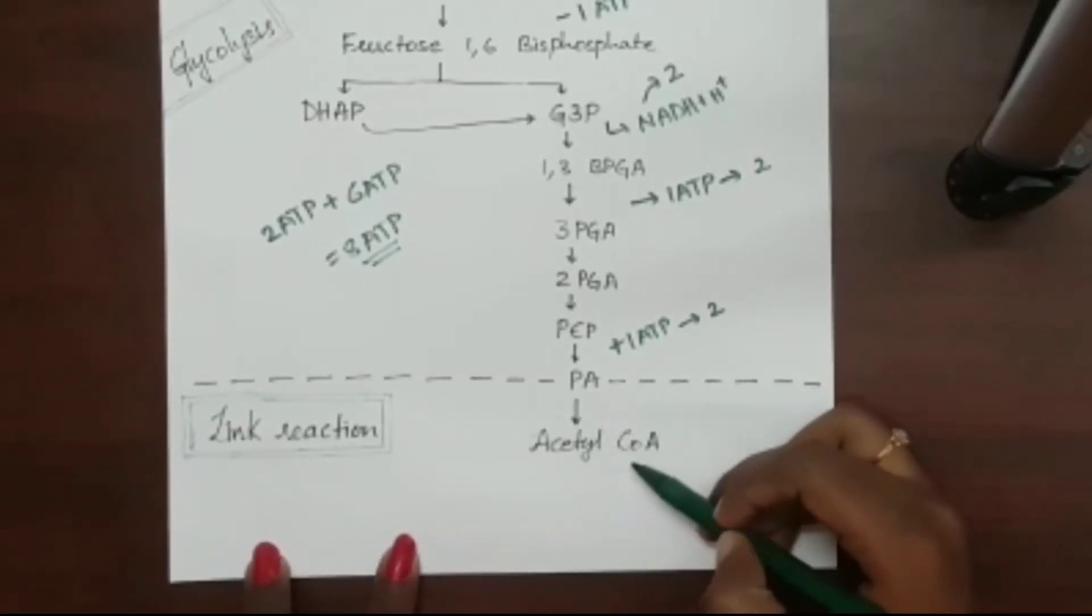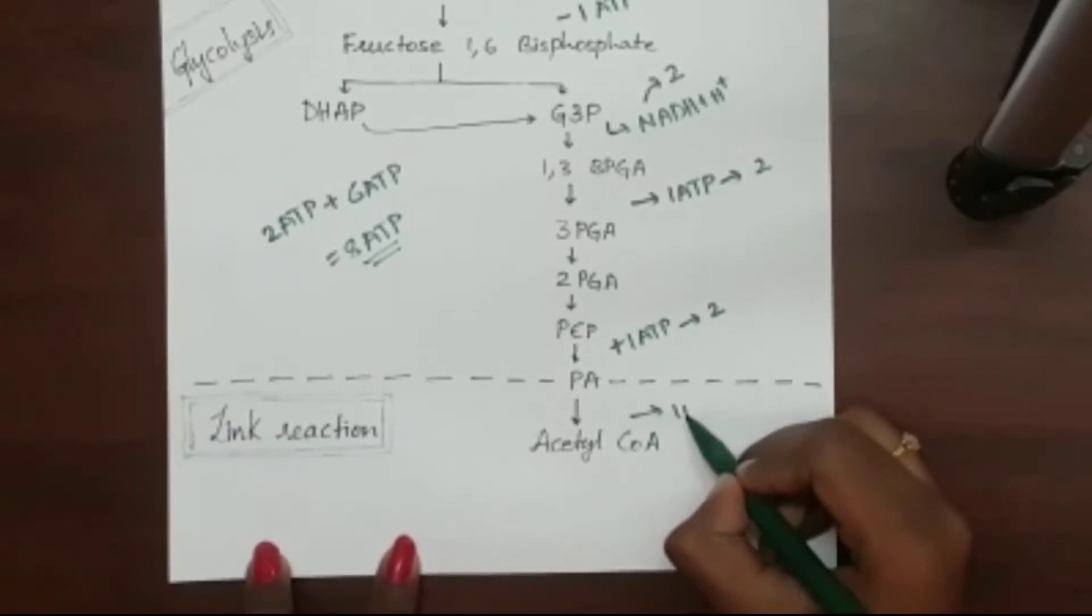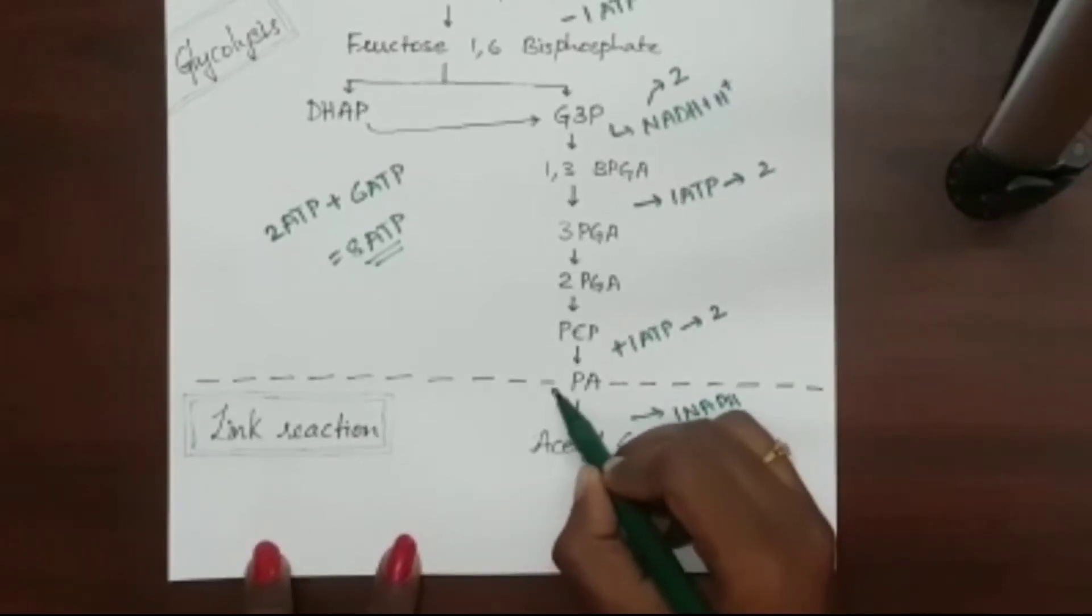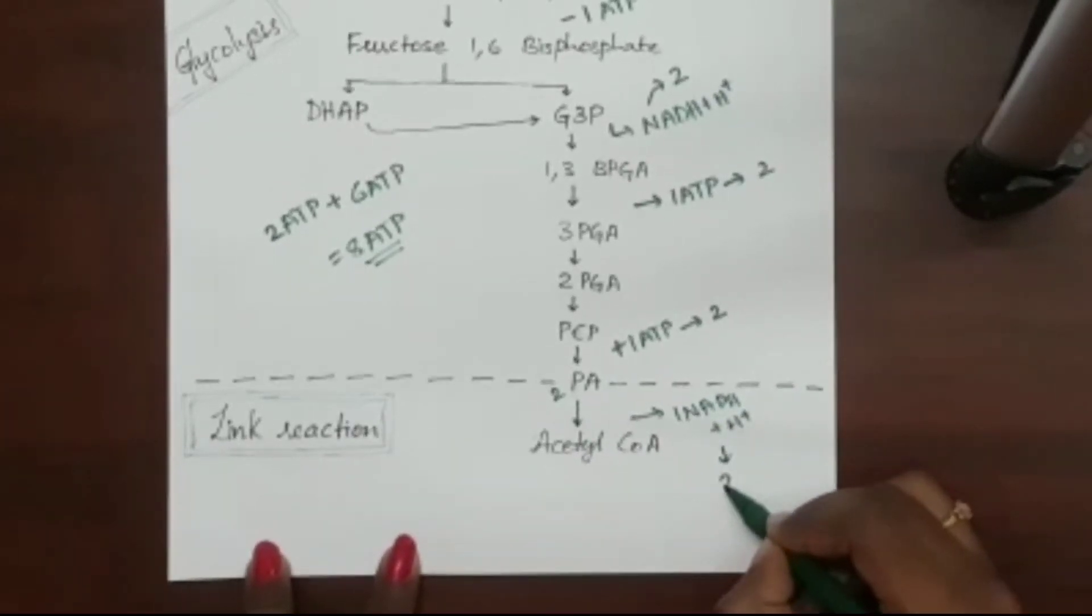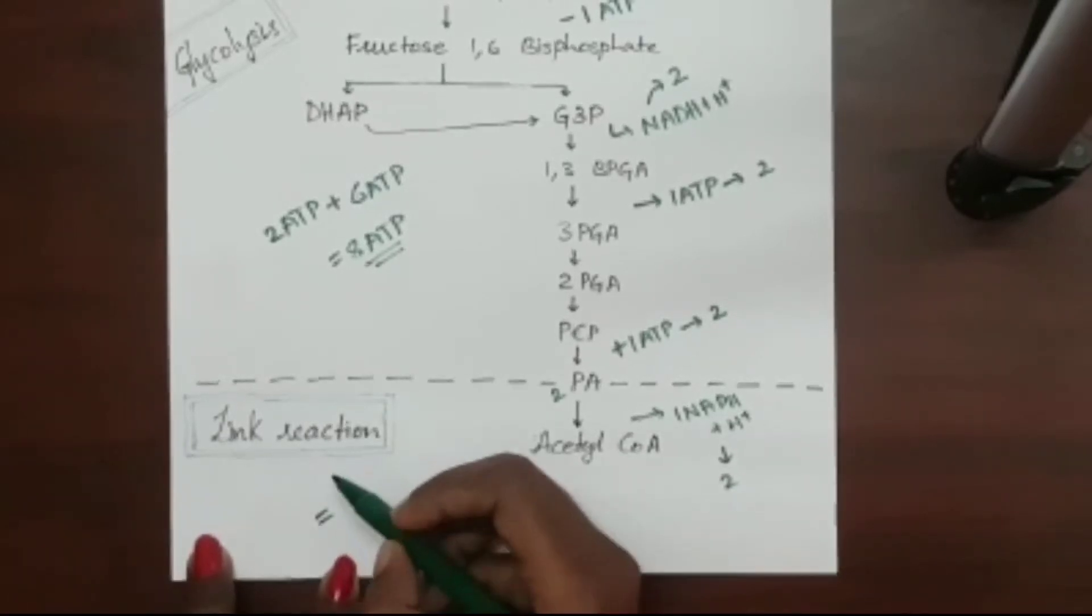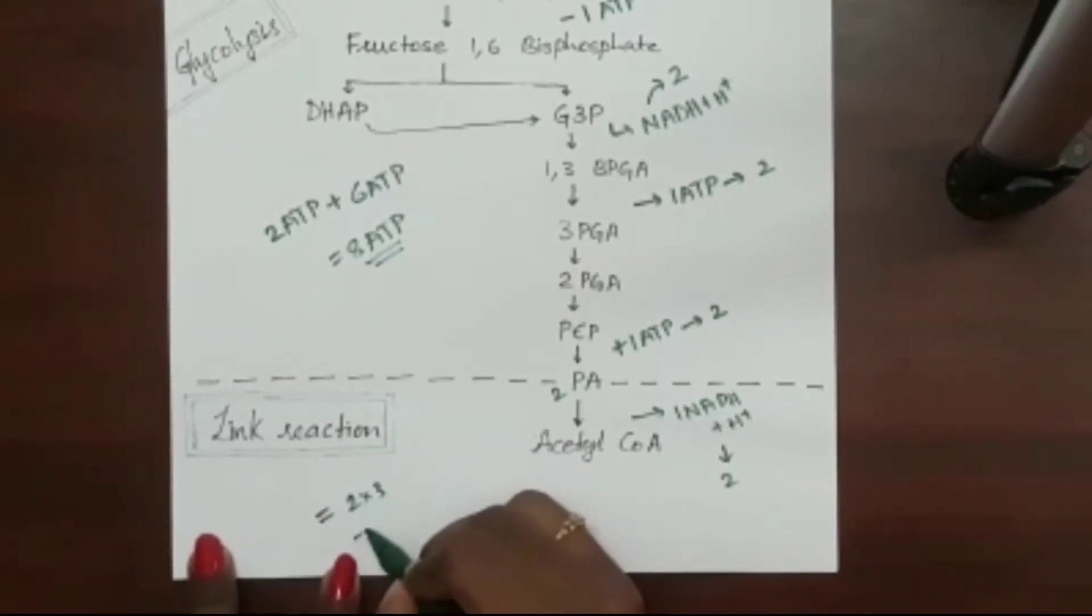Coming to the link reaction, from pyruvic acid to acetyl coenzyme, there is release of 1 NADH++, H+. As there are two pyruvic acids, 2 NADH++, H+ are released. So the net gain of ATP in link reaction would be 2 times 3, 6 ATP.